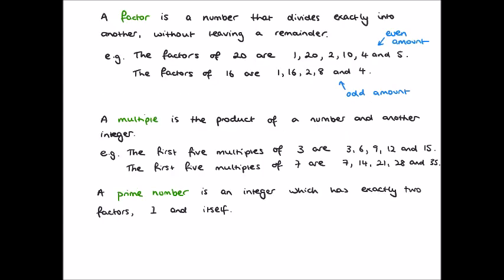And finally, we come to the definition of a prime number. These are a really special type of number. They are numbers, in fact whole numbers, which have exactly two factors, one and itself. And note that a prime number, by definition, will always be a positive integer. The first few prime numbers are 2, 3, 5, 7, 11, and 13.